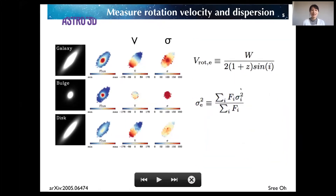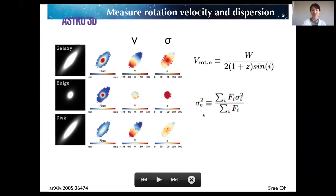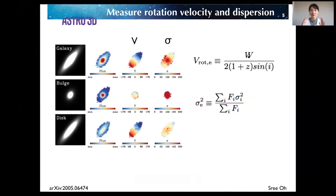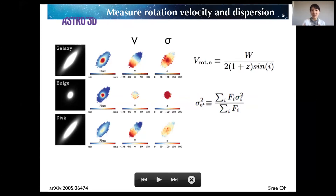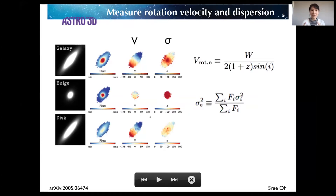Using these spatially resolved kinematic maps, I measured the representative rotation velocity and velocity dispersion using a specific formula. For rotation velocity, I used the velocity width between the top 10% and the bottom 10% of the velocity distribution within the effective radius. The velocity dispersion was measured as the flux-weighted average within the effective radius, using the same aperture — the effective radius of the galaxy as a whole — for measuring the kinematics of both bulge and disk.